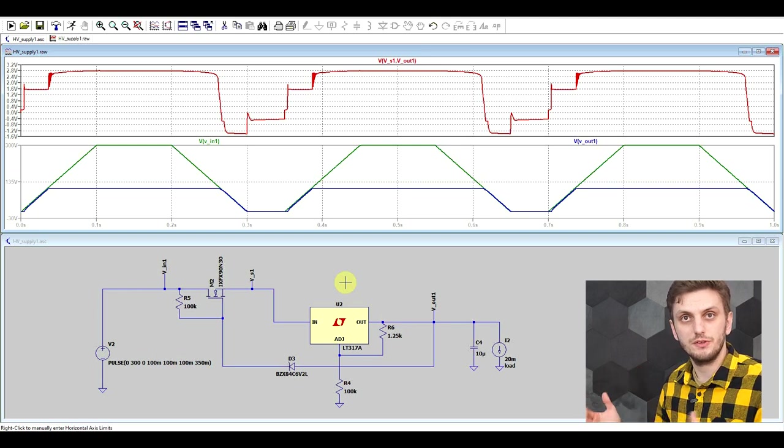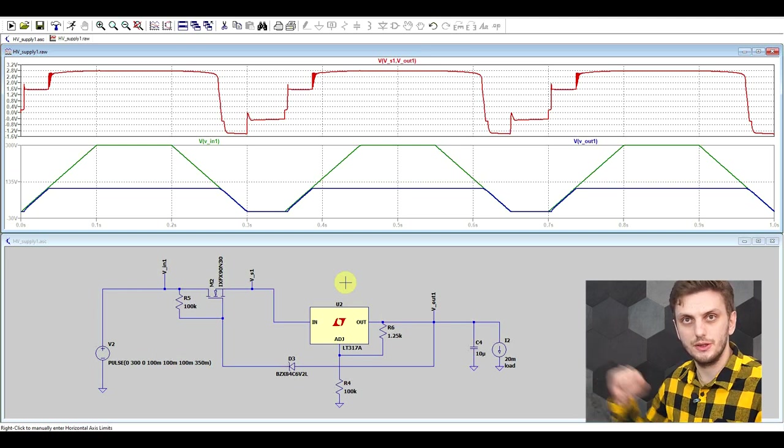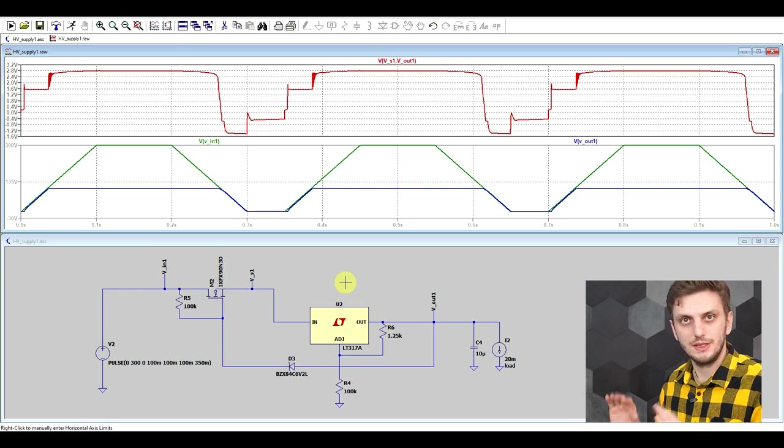So our secondary stabilizer circuit is working perfectly. The LT317 will not see more than 3 volts with this configuration. So even though there's 200 volts dropping on the regulator, the 317 is safe.